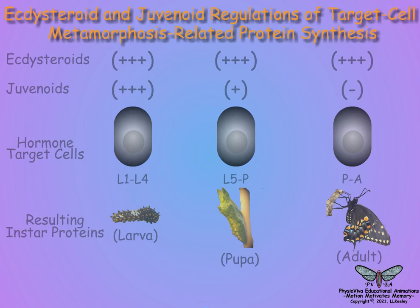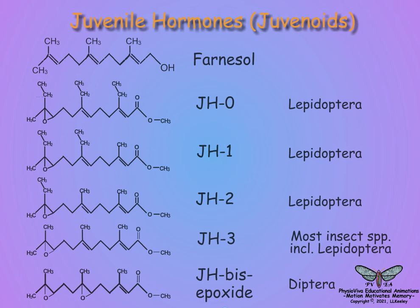The presence or absence of juvenile hormones during ecdysteroid exposure at the time of molting reprograms protein synthesis by the cells relative to whether they will synthesize larval, pupal, or adult protein. Eventually, it was determined that juvenile hormones were methylated derivatives of farnesol.